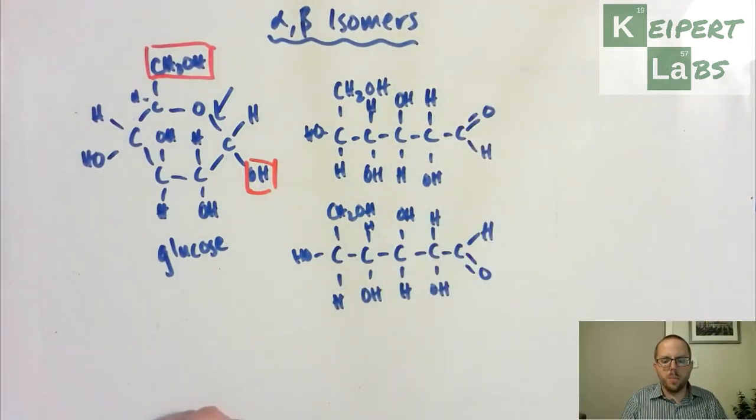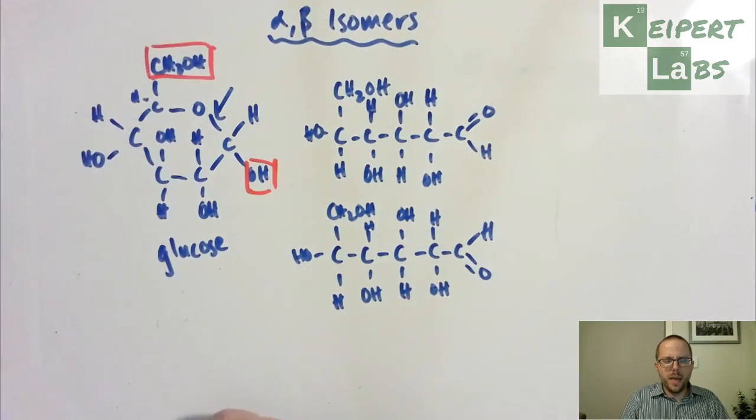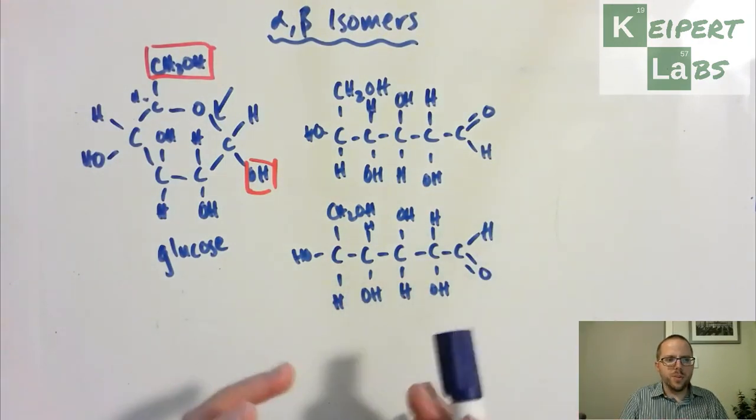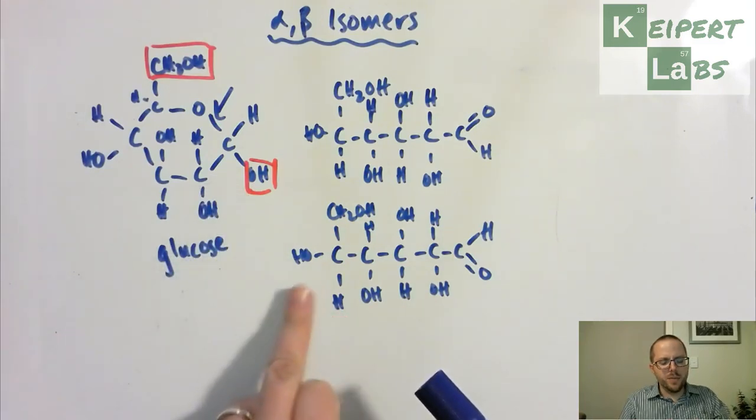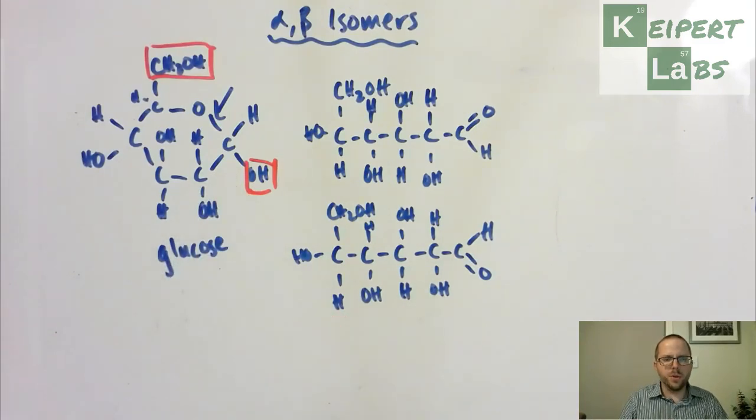but that when this group is oriented in the opposite way, what we get when it closes, the ring closes up, is that we get a different version of this final glucose molecule. I'm going to draw it over here.